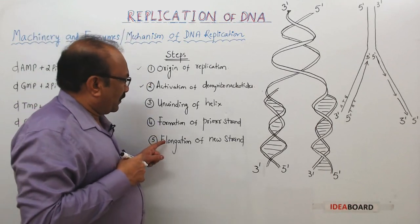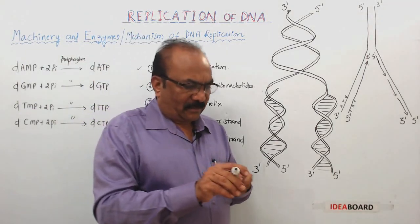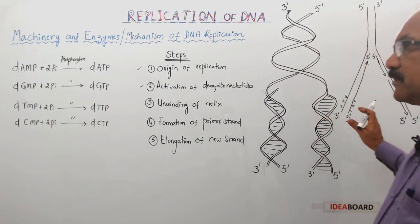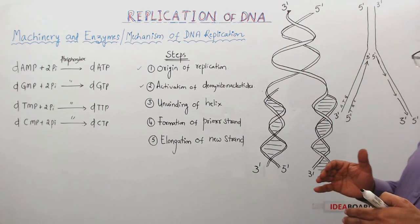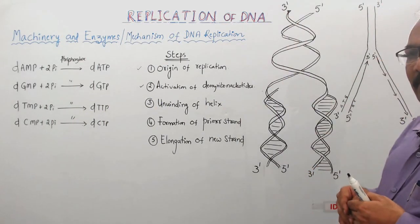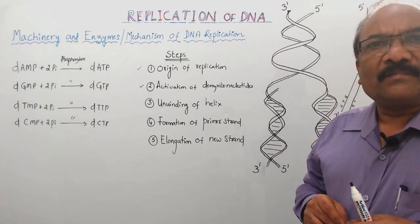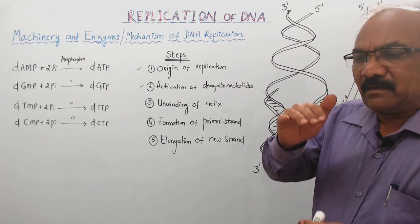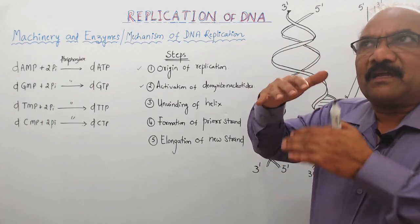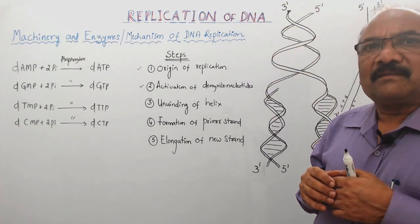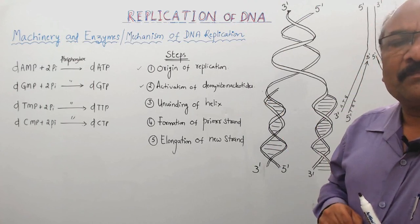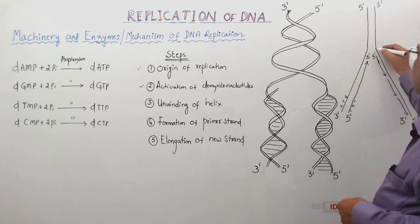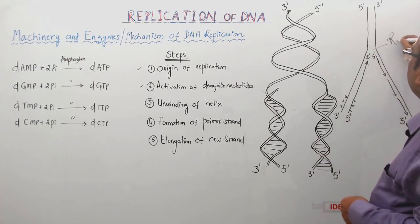The fifth step is the elongation of the new strand. Whenever the DNA helix opens, it does not open completely because that would require too much energy. Instead, it opens in a stepwise manner to conserve energy. As a bit opens and replication proceeds, one more bit will open. Whenever it opens, an inverted Y-shaped structure is formed, which is called the replication fork.